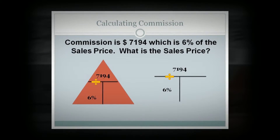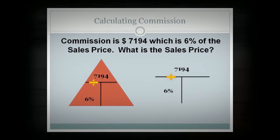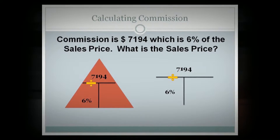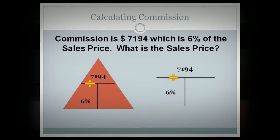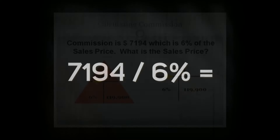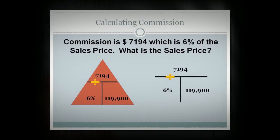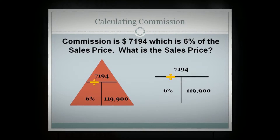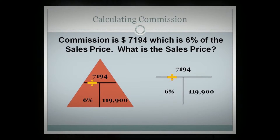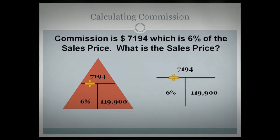Example three: you know that you paid $7,194 for commission and that it was 6% of the sales price — how much was the sales price of the property? You would put the portion, $7,194, in the top or portion area, put 6% on the bottom left-hand side, and enter into your calculator $7,194 divided by 6% — and that gives you $119,900. If you don't have a percent key on your calculator, simply turn that into a decimal.